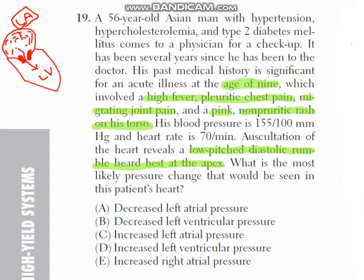Looking at the answer choices: decrease left atrial pressure — no. Decrease left ventricular pressure — the left ventricular pressure actually decreases, but that is not the best answer here. Increase right atrial pressure — the right atrium is not involved in this case. Increase left ventricular pressure — this does not happen in mitral stenosis. Therefore, the best answer is increase left atrial pressure, and the patient is suffering from mitral valve stenosis.